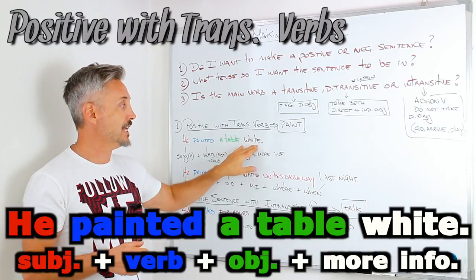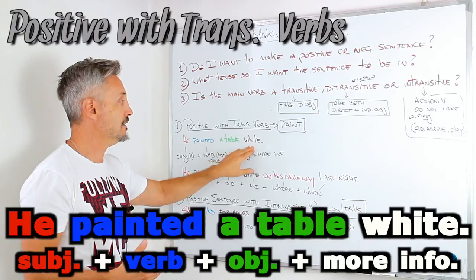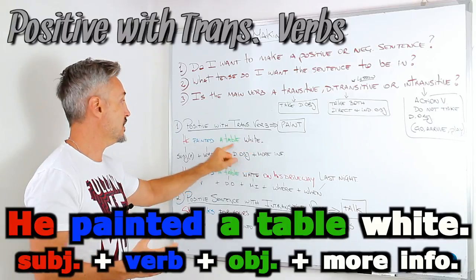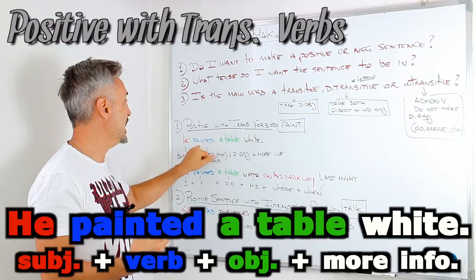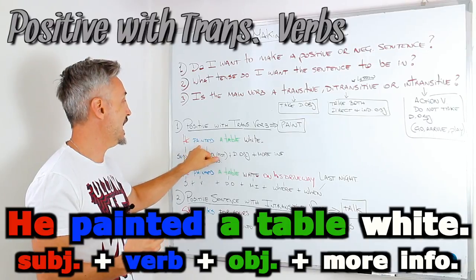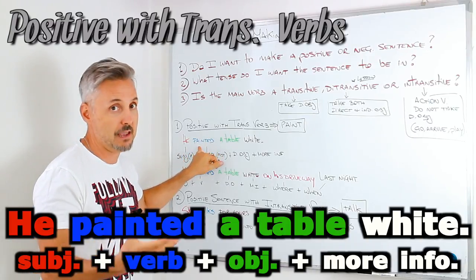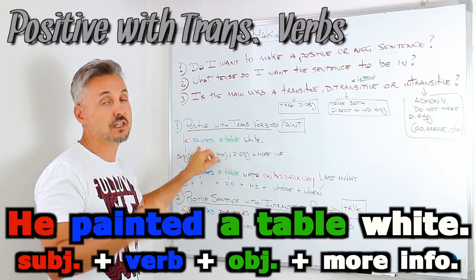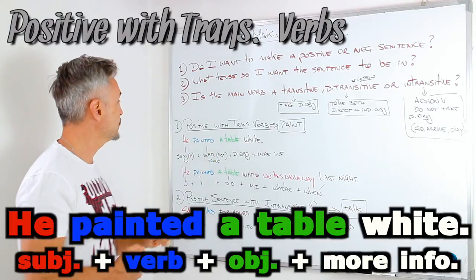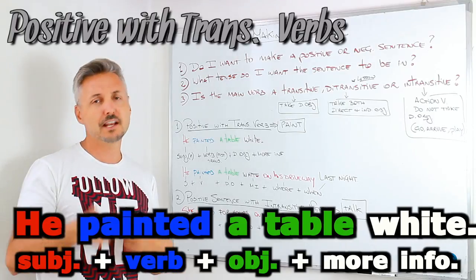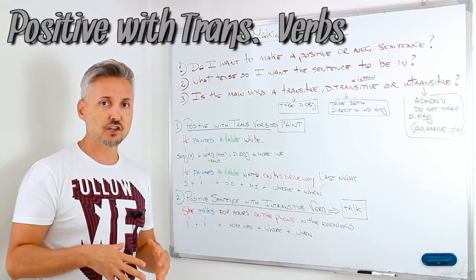And then white for more information — white is related to paint. He painted the table white. He painted what? The table. What color? White. Let's look at another example adding more information.